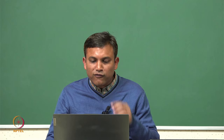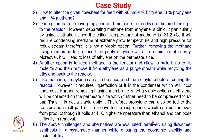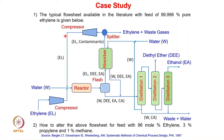The question now is how to modify this flow sheet for the given feed condition of 96 mole percent ethylene, 3 percent propylene, and 1 percent methane — not 99.996 percent pure ethylene. One has to modify this flow sheet to handle an impure feed, and we need to look at the different options or alternatives to do that.